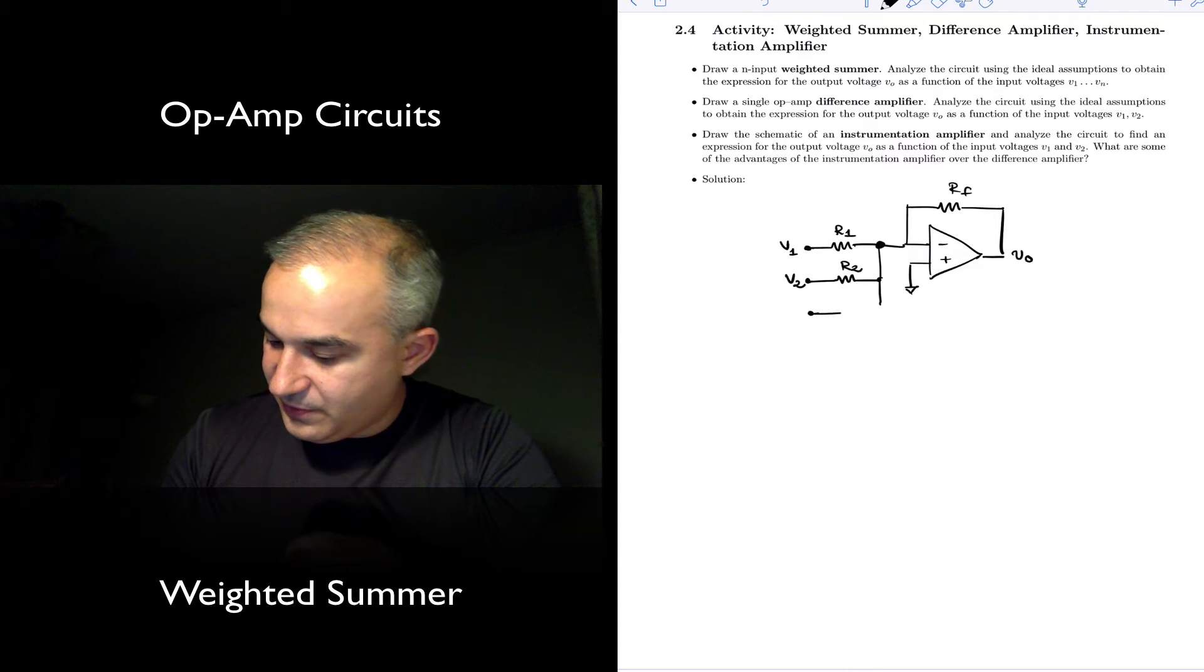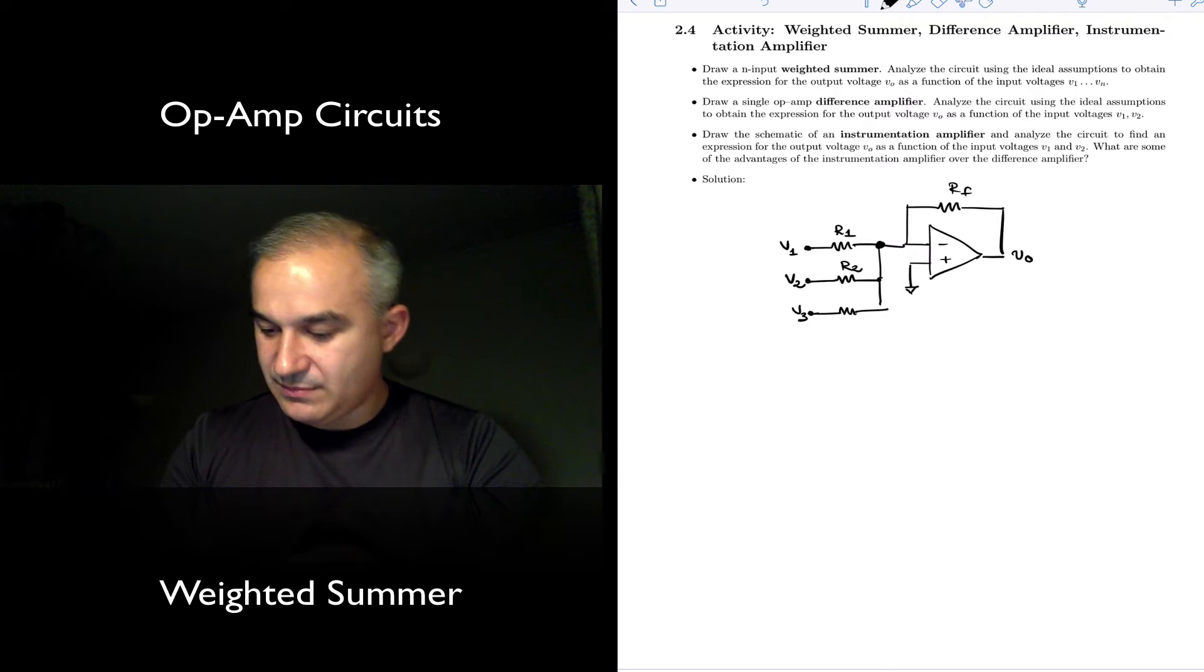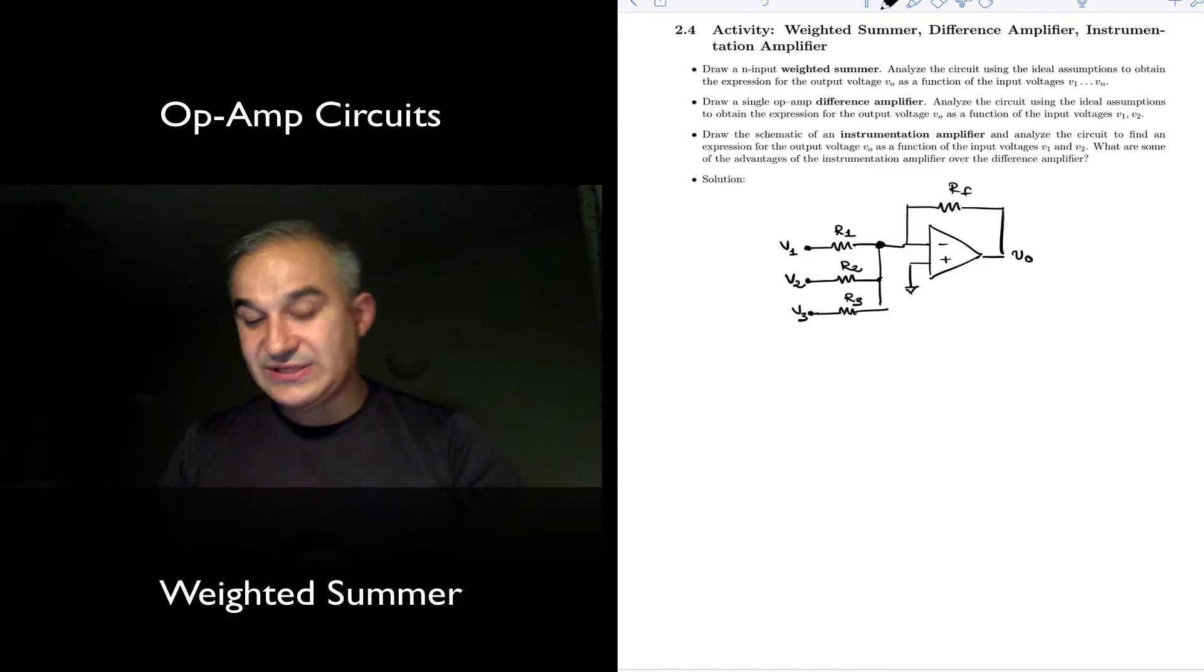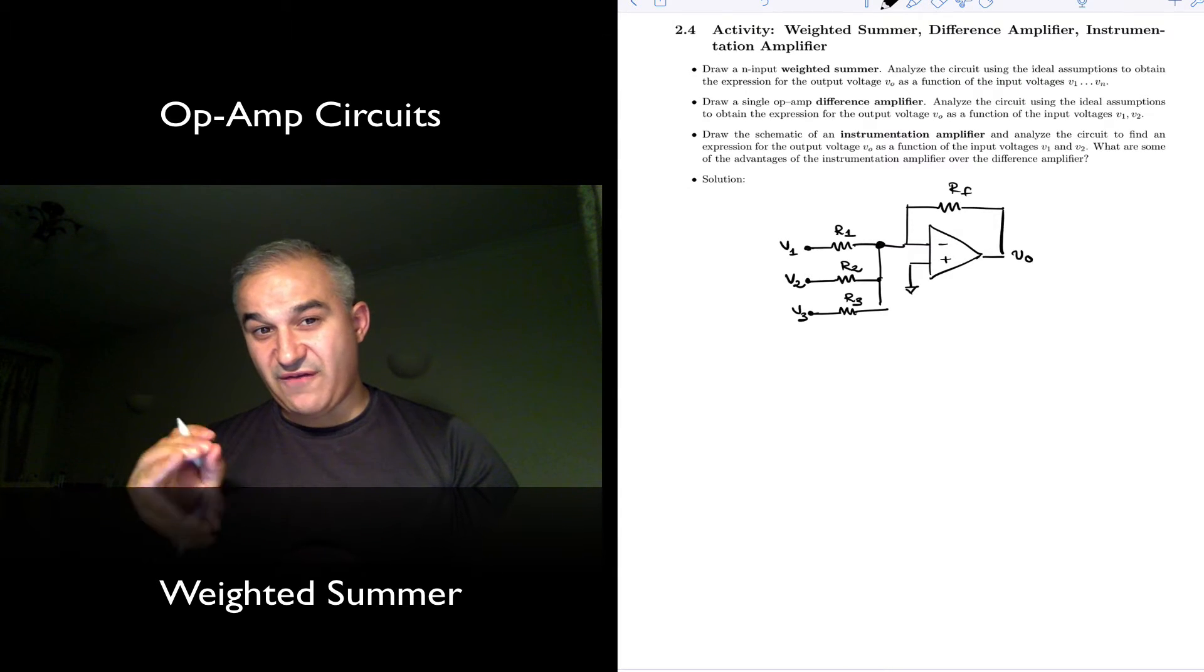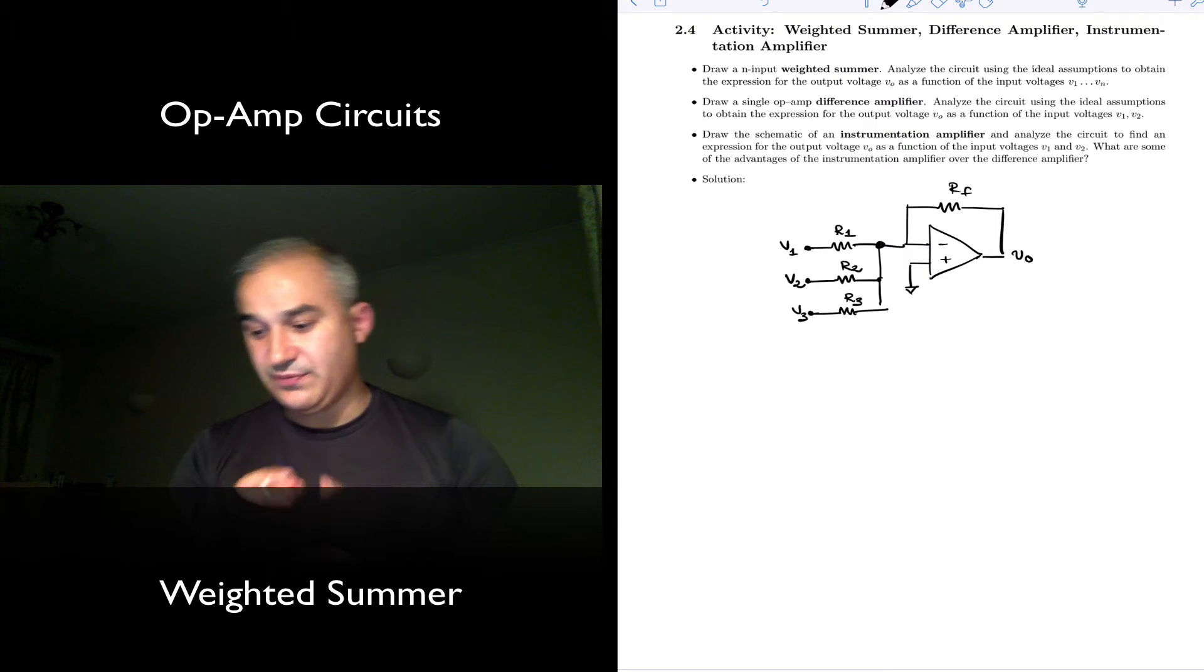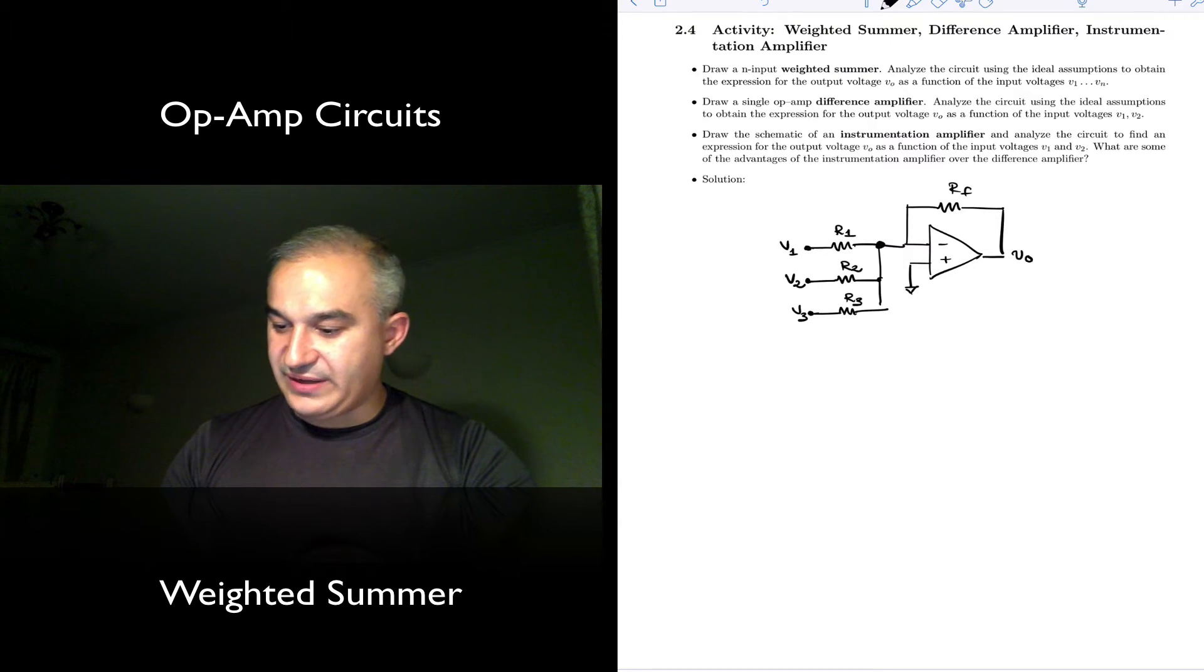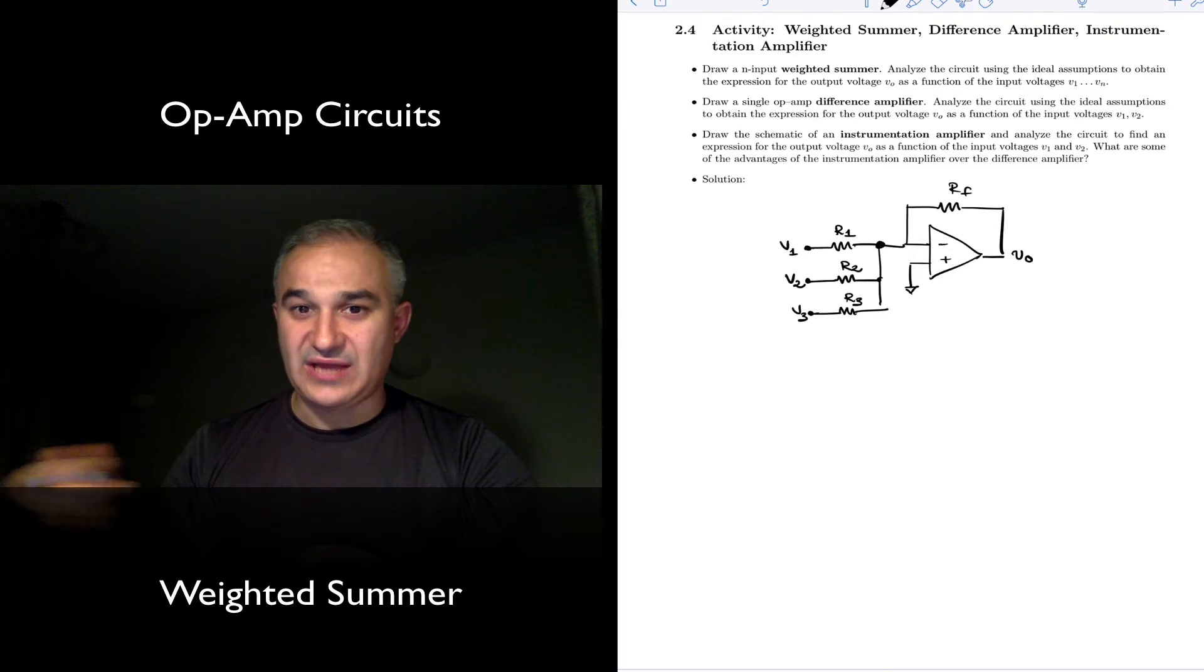You have a third input V3 with resistor R3. What is the output? You apply superposition. We ground V1 and V2. Those are connected to ground. Voltages are zero. So the output would be minus RF over R3 times V3.